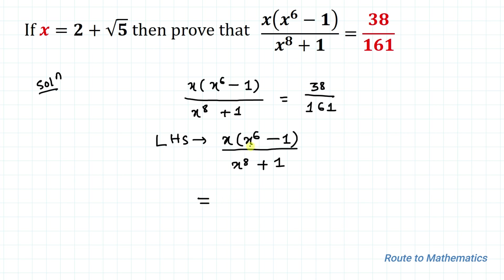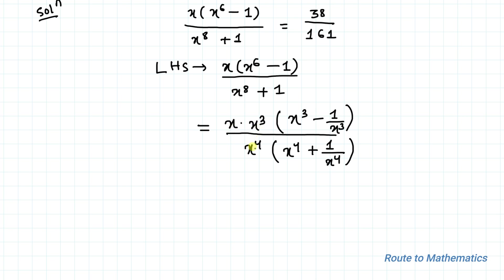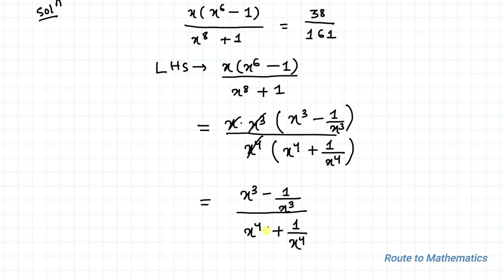In the next step let's take x³ common in the numerator. So we have x · x³ · (x³ - 1/x³) in the numerator. In the denominator part let's take x⁴ common, giving us x⁴ · (x⁴ + 1/x⁴). The x and x³ cancel with x⁴, leaving us with the simplified expression (x³ - 1/x³) / (x⁴ + 1/x⁴).